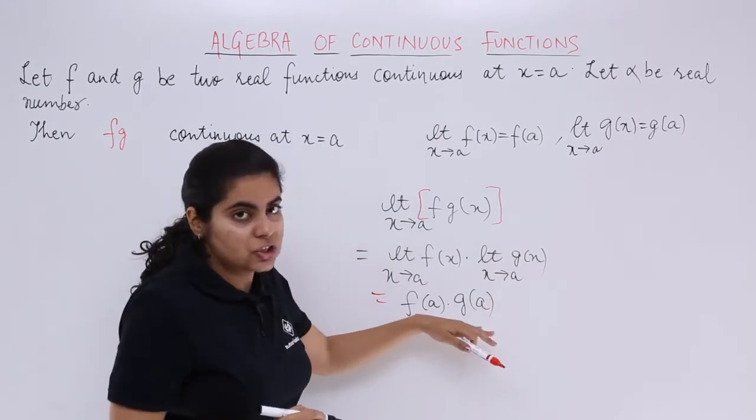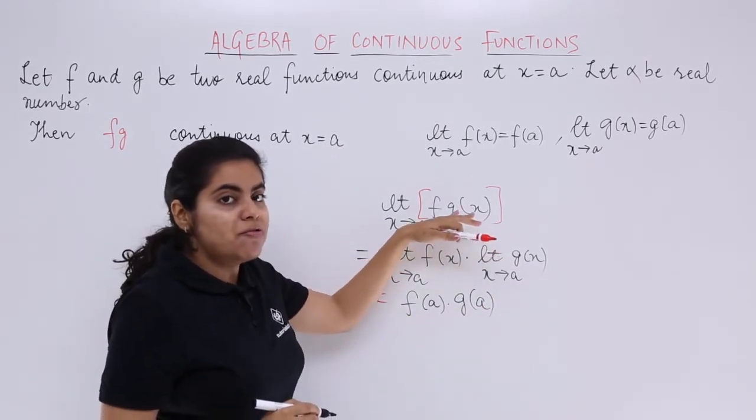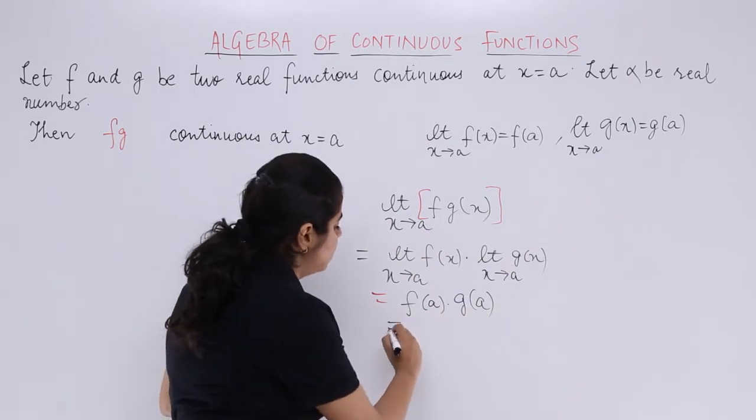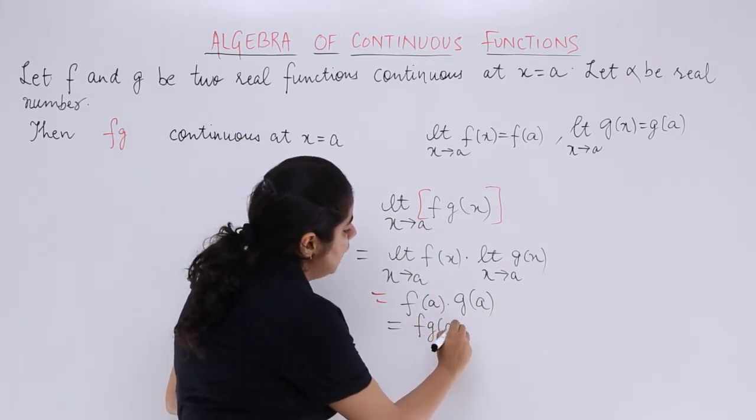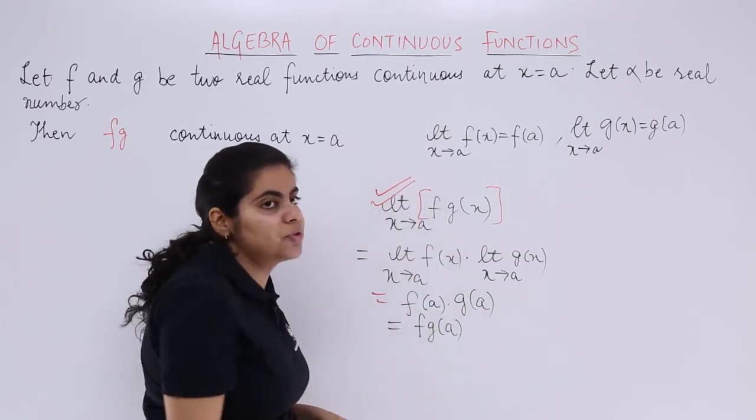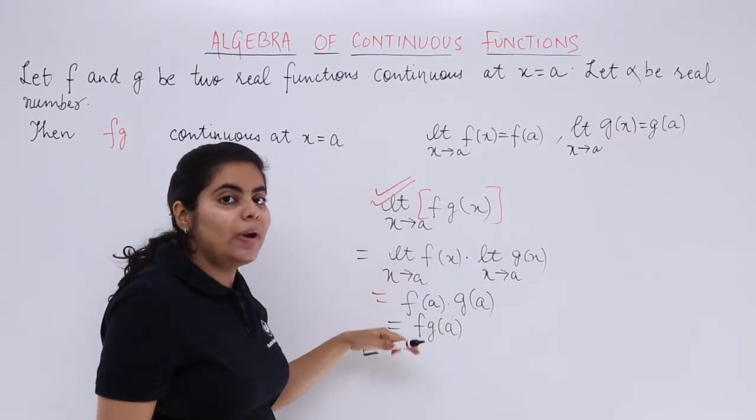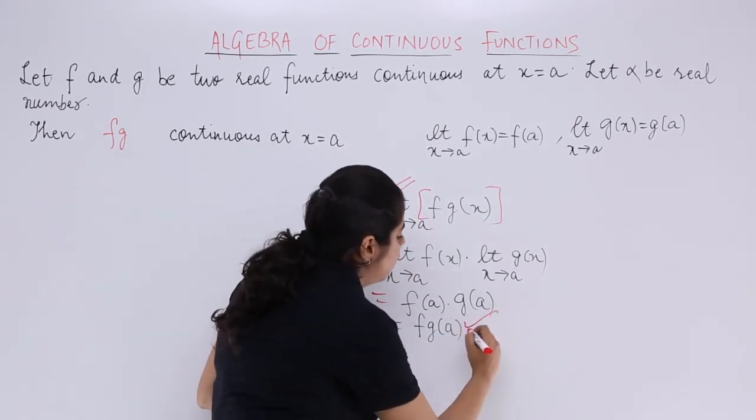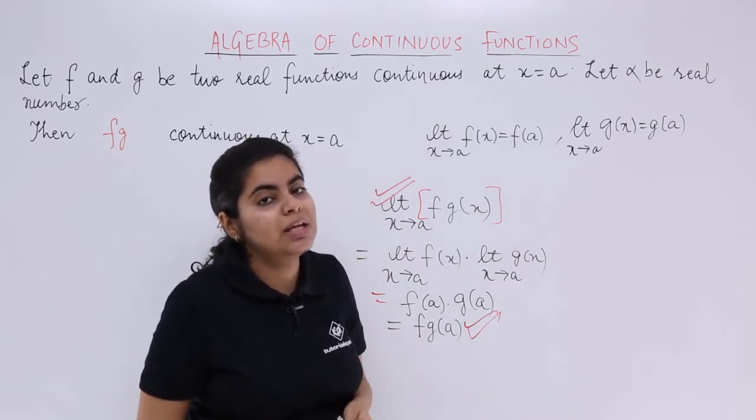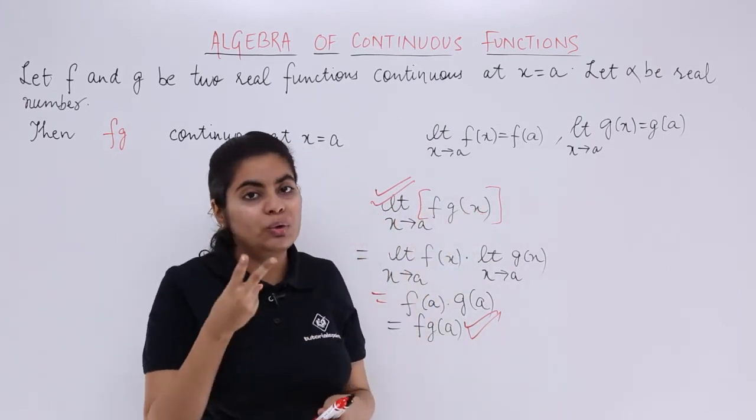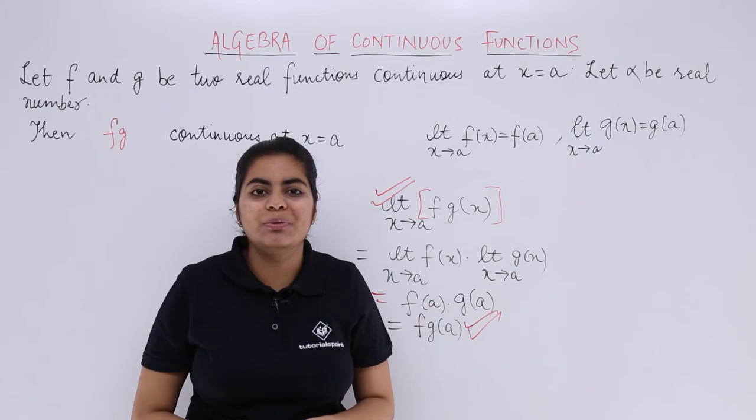This is also a product. When you started with f(x)g(x), you reached f(a)g(a). That means you started with the limit concept and that got equated eventually to the value of the function. So that means the product of two continuous functions is also continuous.